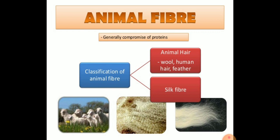Wool is a natural fiber and is generally obtained from the fur of sheep. Hence sheep are the principal source of natural fiber. Silk is obtained from the cocoon of the silk worm, which feeds on mulberry leaves.